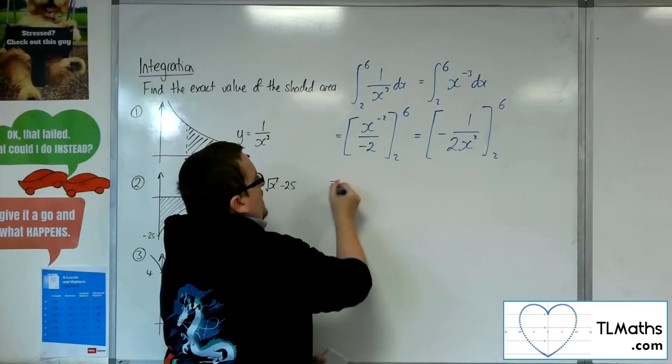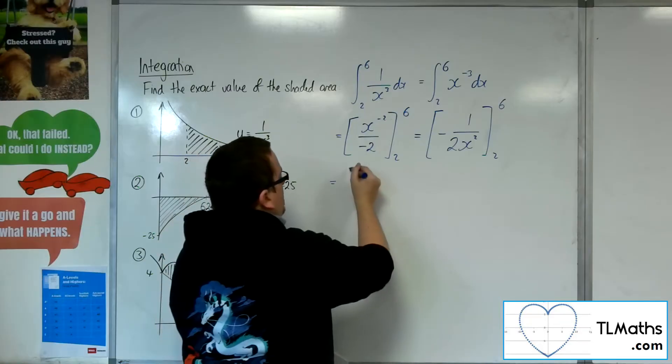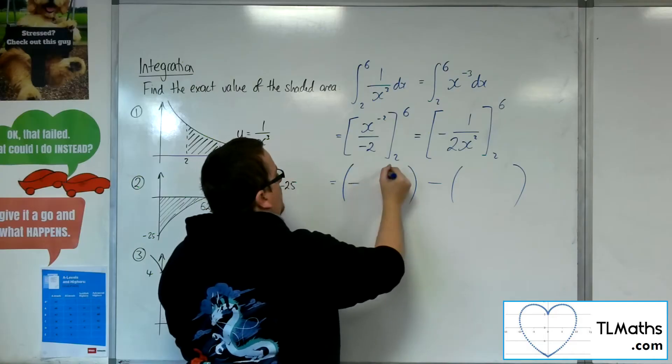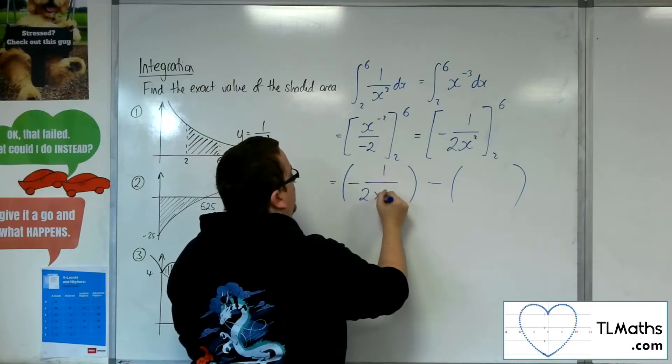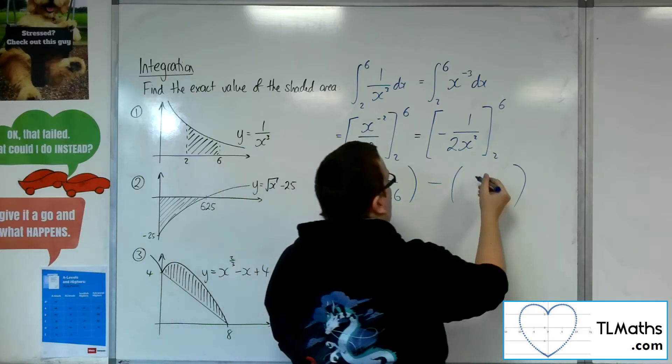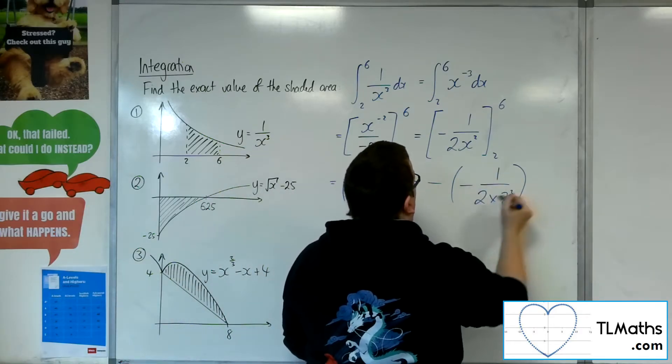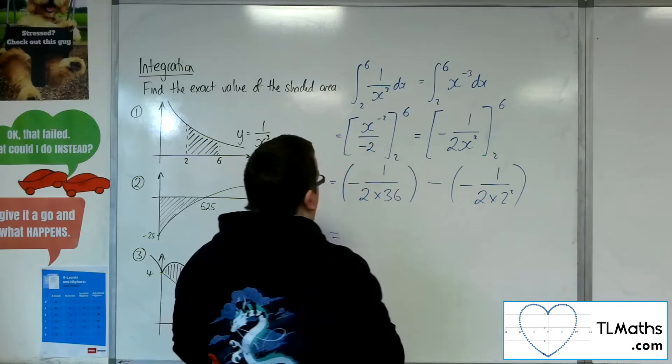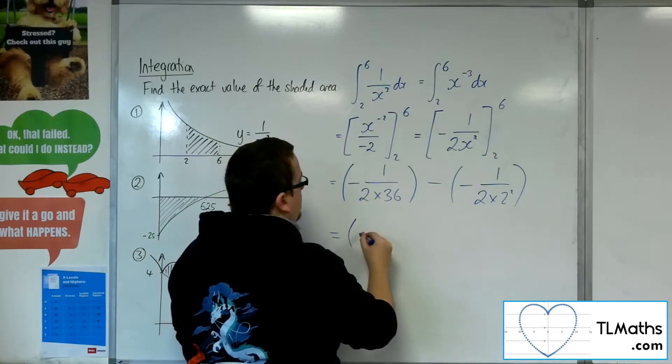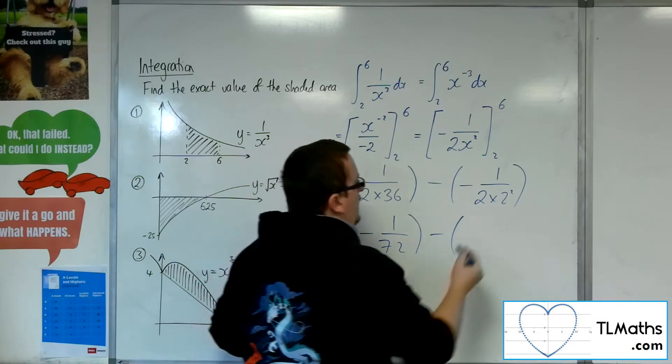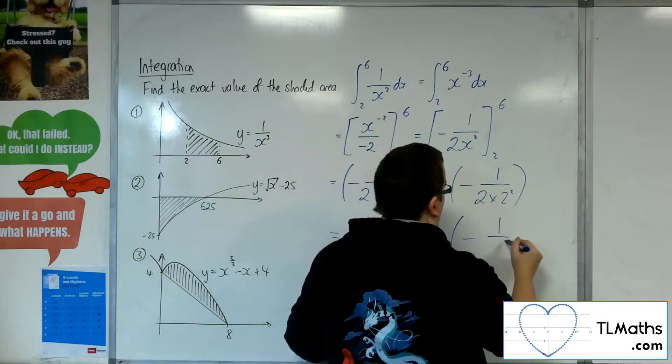So now I want to substitute in the 6, so open up a bracket. So minus 1 over 2 lots of 36, so the 6 squared. And here, substituting in the 2, minus 1 over 2 lots of 2 squared. So what have we got in this bracket? We've got minus 1 over 72, and we're going to take away, in this bracket, minus 1 over 8.